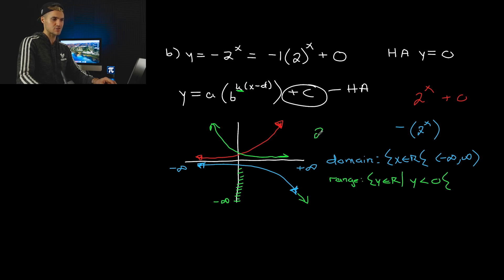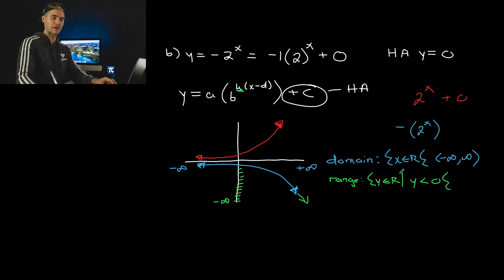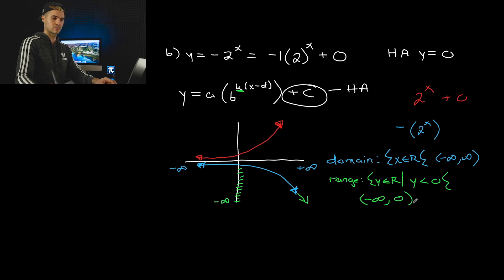This green graph I just graphed is 2 to the power of negative x. So it's only the negative a-value that actually reflects it over the horizontal asymptote, which affects the range of an exponential function. So the range of this one: y is less than 0. In interval notation, we say it's all y-values from negative infinity all the way to 0, not including 0. And is this a function? Yes, it's a function — it passes the vertical line test everywhere.